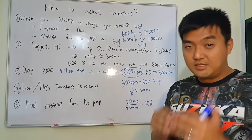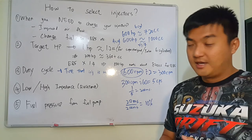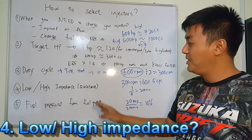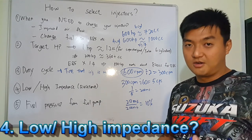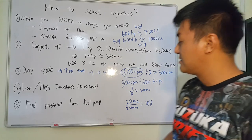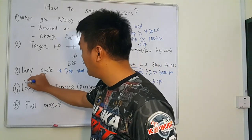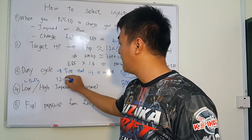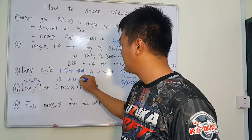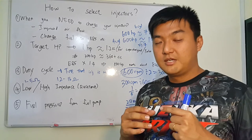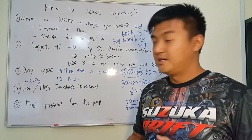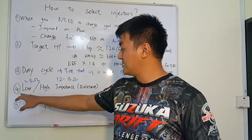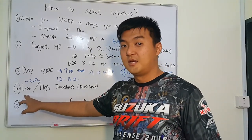The fourth thing is we need to know whether the new injectors we are buying are low impedance or high impedance. Impedance, in layman's terms, we just call it resistance. Low impedance is about 1 to 5 ohms. High impedance is about 12 to 16 ohms. If you are using low impedance injectors, remember they are not interchangeable, and you require a resistor pack for them.